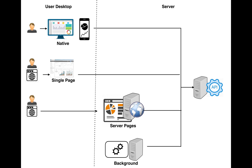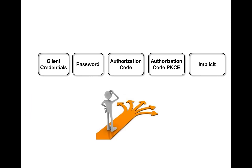Single page applications get downloaded from the servers and then run directly on the browsers, built on JavaScript platforms like Angular, React, etc. Then server pages are applications which emit HTML and run on the browsers — applications like JSP, Servlets, PHP, ColdFusion, and Python fall into this bucket. The last type are applications which run on the server and there is no user interaction with those applications.